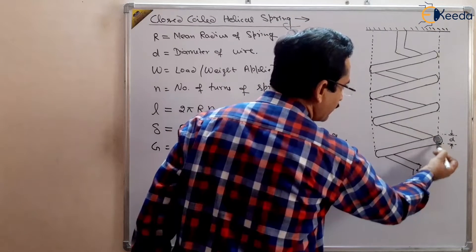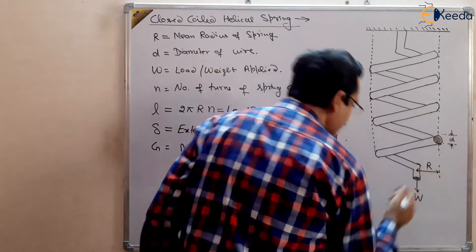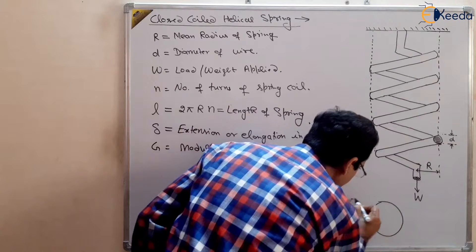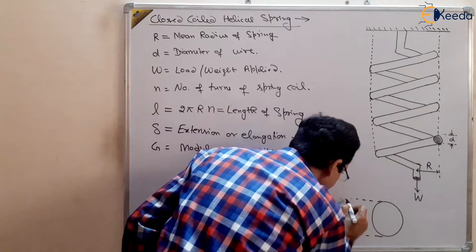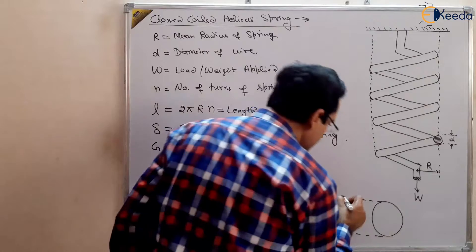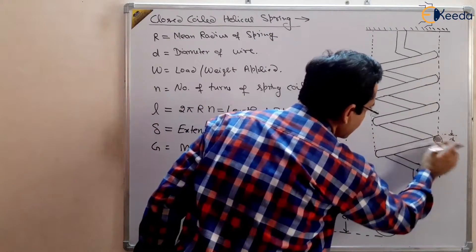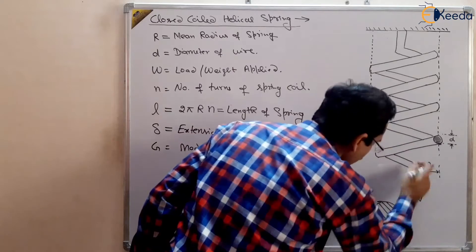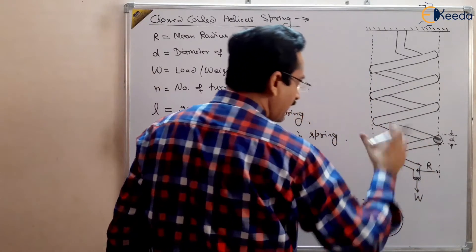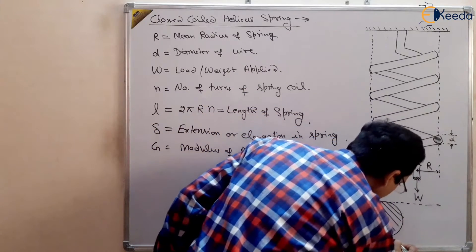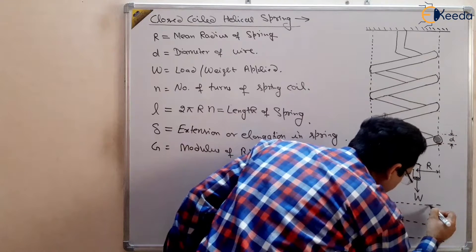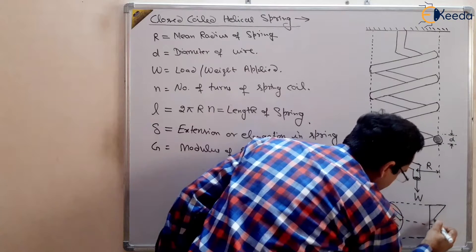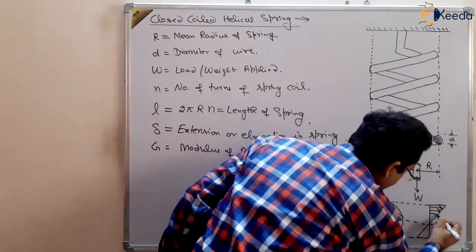At the outer diameter of the spring the shear stress will be maximum. If I draw the shear stress diagram for the spring wire of diameter d — I am making it larger here for clarity — this is the diameter of the spring wire. When the load is applied, a torque acts on the spring wire and shearing stress is developed. You can see the shear stress developed in the spring wire like this.